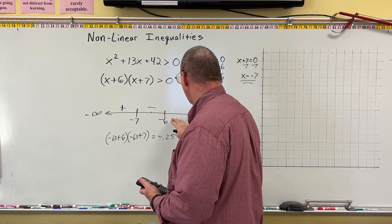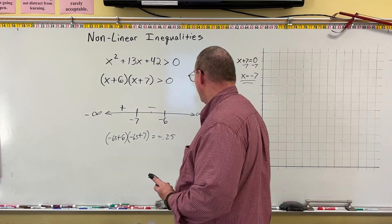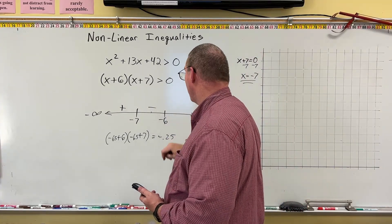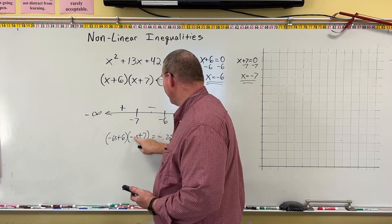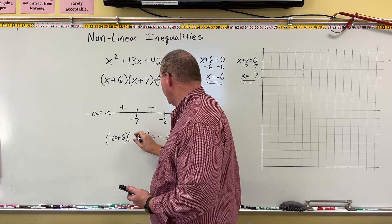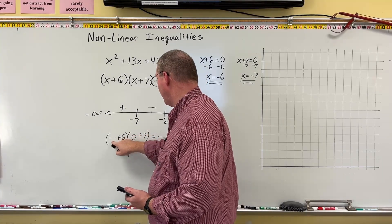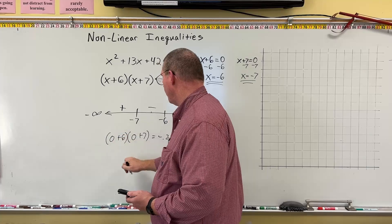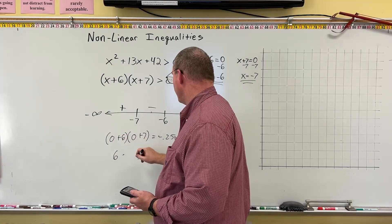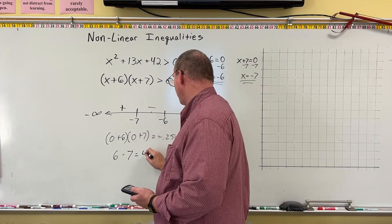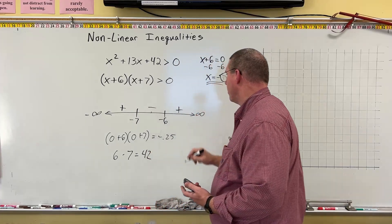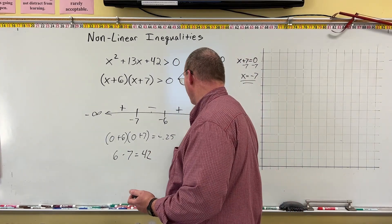And now I need a number larger than negative 6, but anything larger than negative 6. I can do negative 5, or I can do 0. I'm going to go ahead and do 0. And here we have 0 plus 6 is 6, times 0 plus 7 is 7. That equals 42, and that's a positive number. And so this is our sign chart.